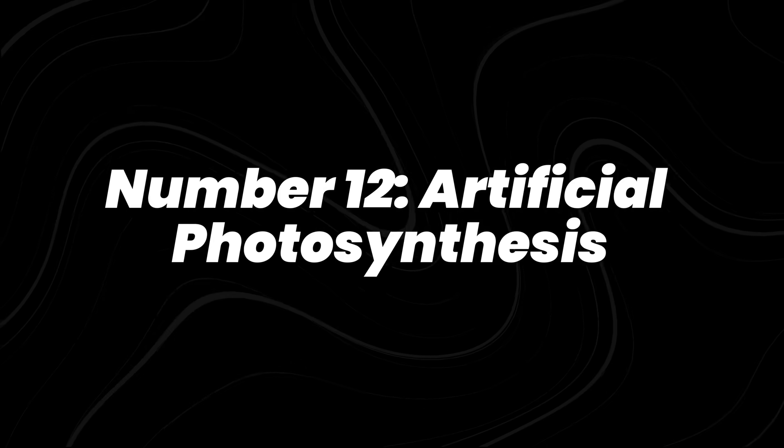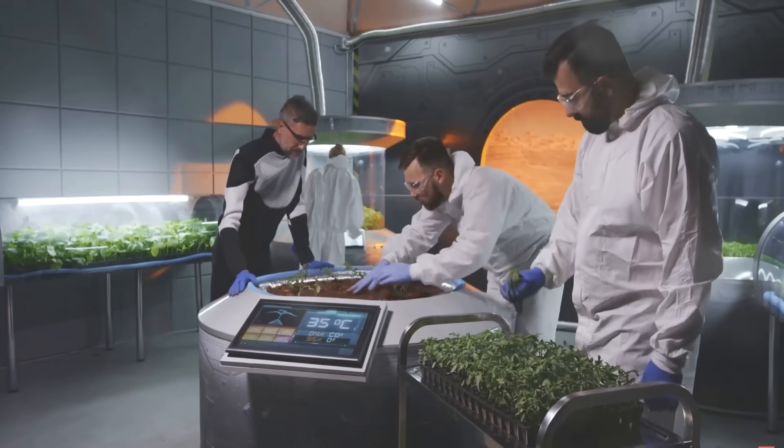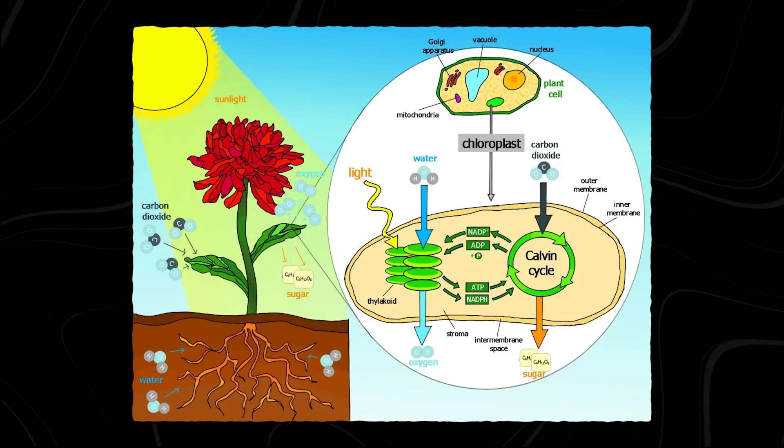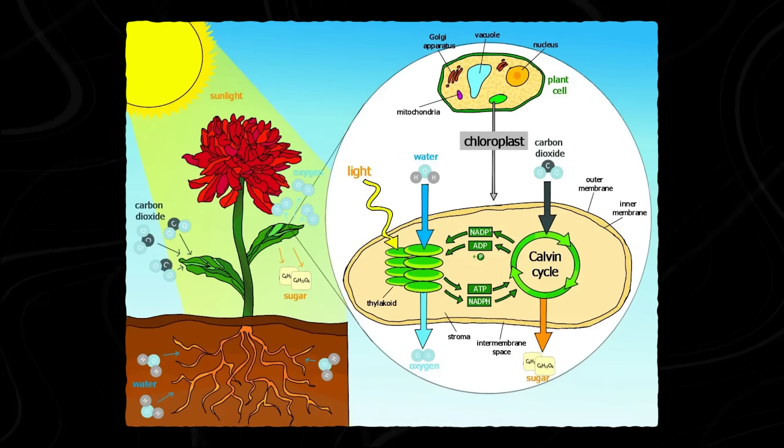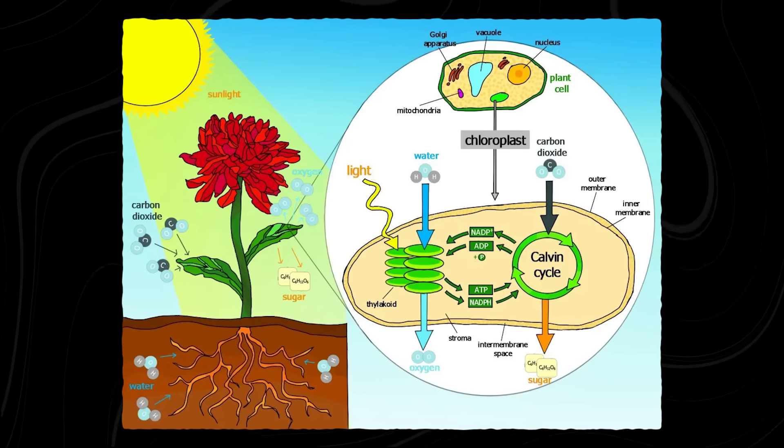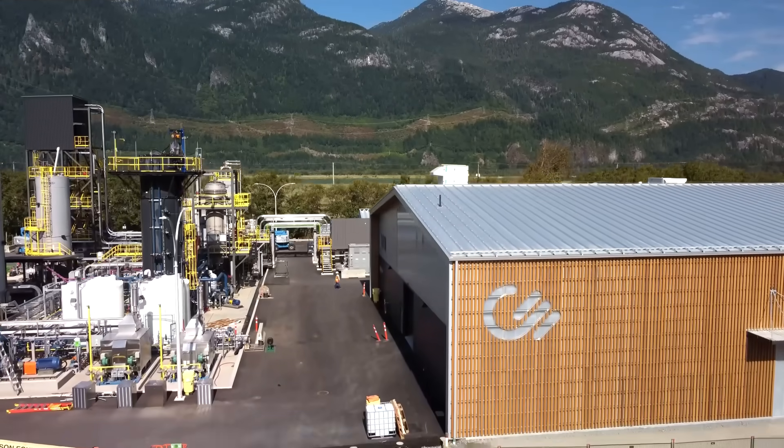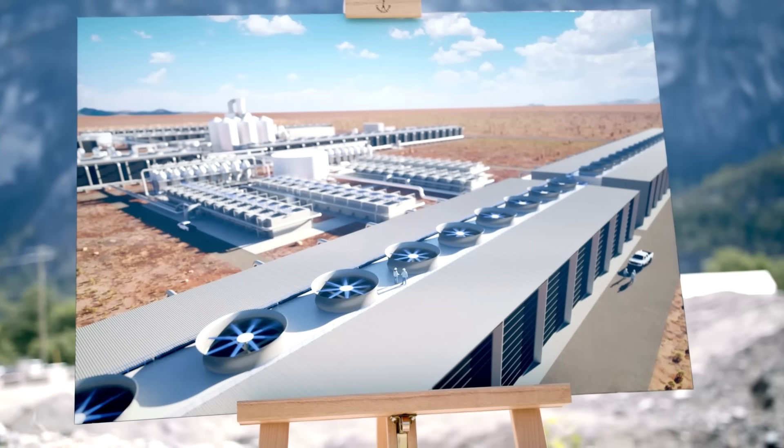Number 12, artificial photosynthesis. Artificial photosynthesis mimics nature's process, but at higher efficiency. Using sunlight, water, and CO2, experimental devices produce liquid fuels, plastics, or industrial chemicals. Some pilot plants already capture CO2 from air or industry and convert it into carbon-neutral jet fuel.